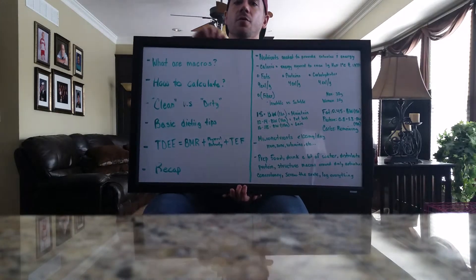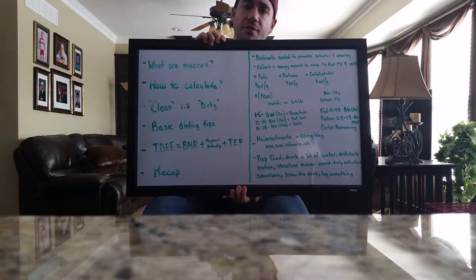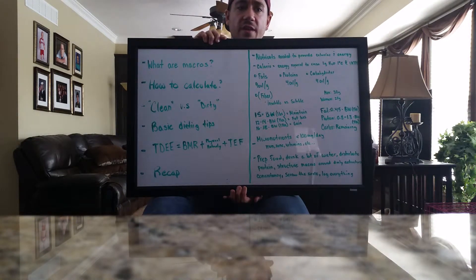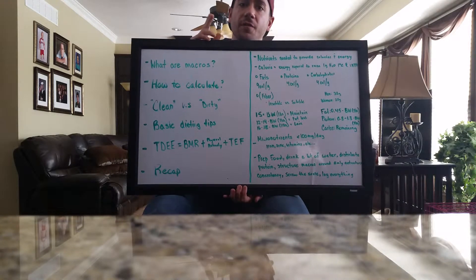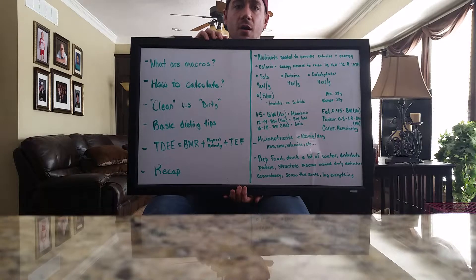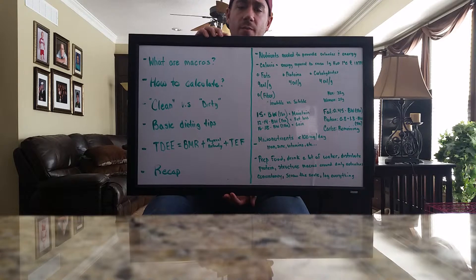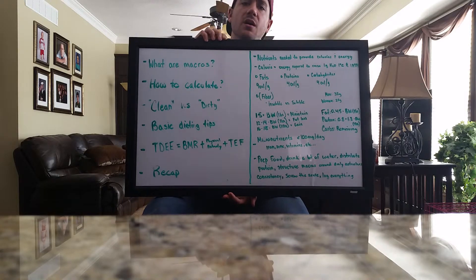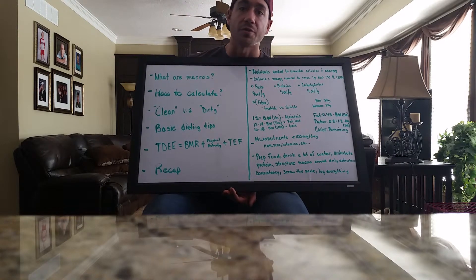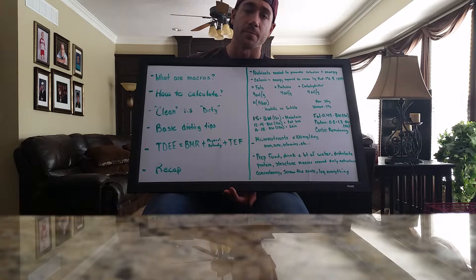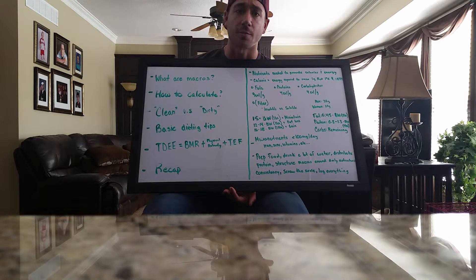Macronutrients — "macro" meaning large — meaning we need these nutrients in large quantities. There are also micronutrients; those are things we don't need in large quantities but still need and are vital for the healthy function of our body. Macronutrients are basically substances that provide energy and calories to our body. Macronutrients are simply your carbs, fats, and proteins.